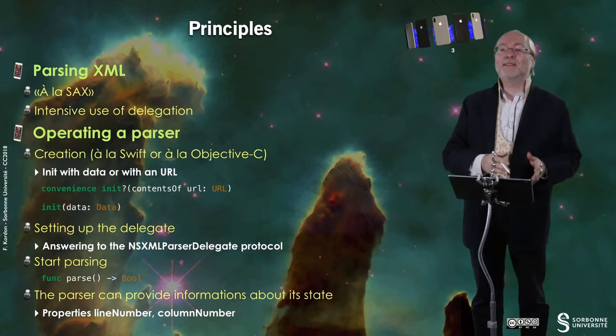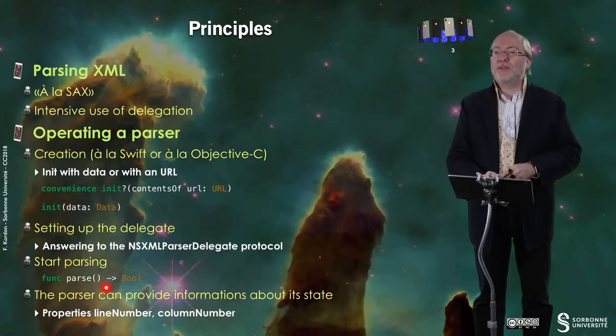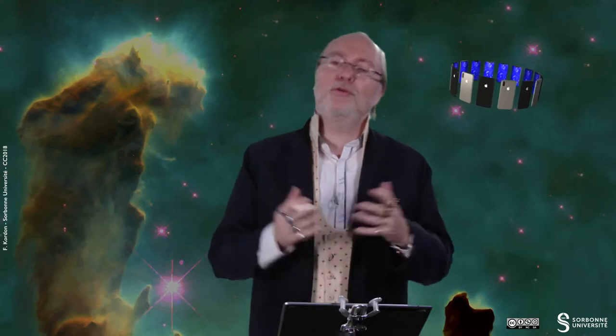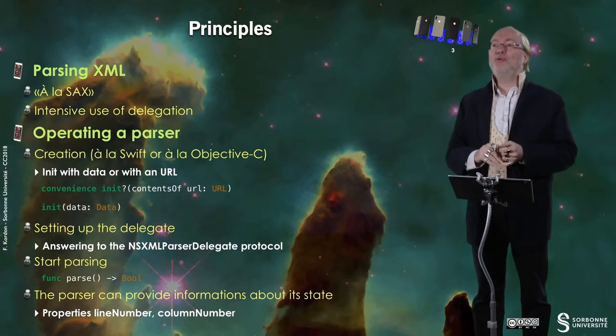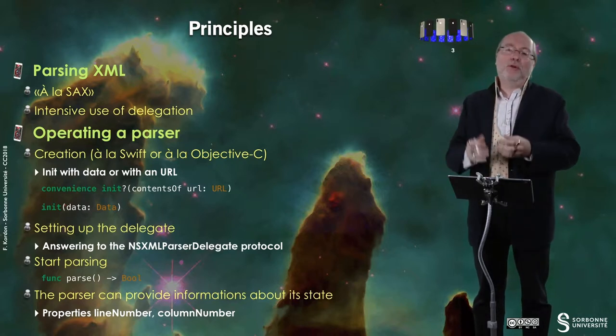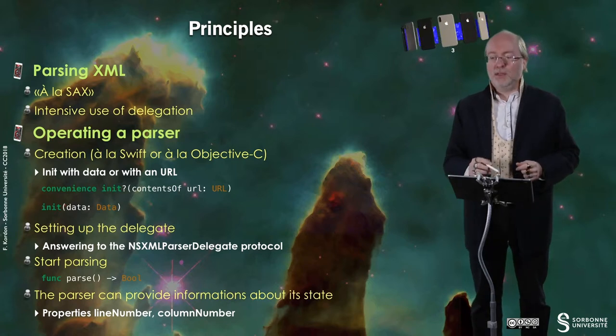This is the role of the NSXMLParser delegate protocol. And when this is done, you can start parsing thanks to this method that returns false if there is a problem. Also, you must know that the parser at a given time can provide useful information. Typically, the properties line number and column number tell you exactly where you are in the file. That's very useful in debug mode to be sure that, for example, somebody provided some malformed XML so that you cannot appropriately analyze it.